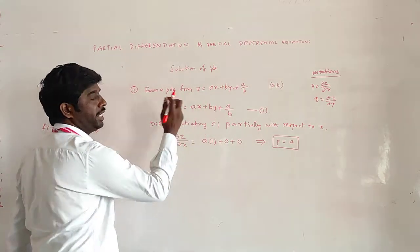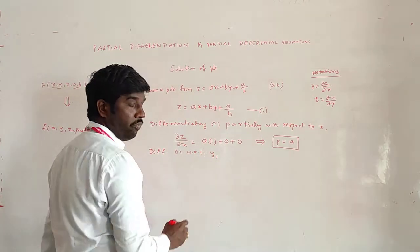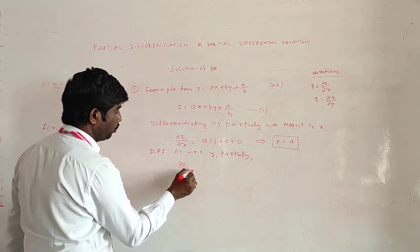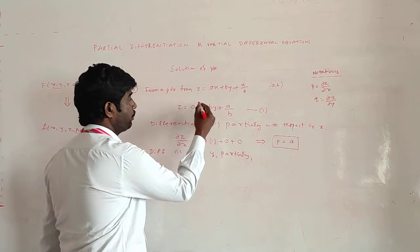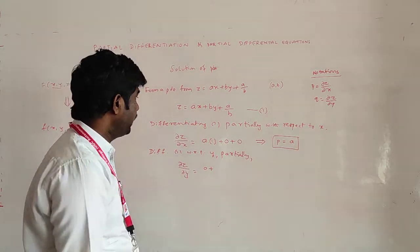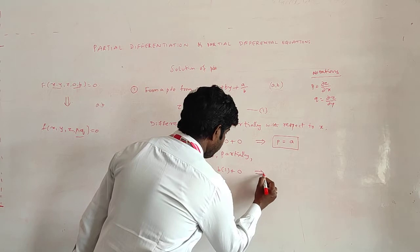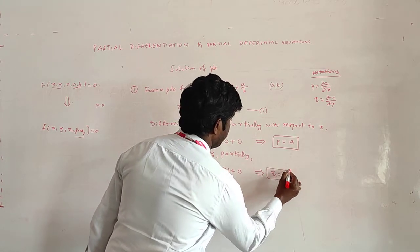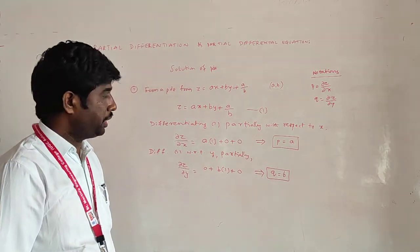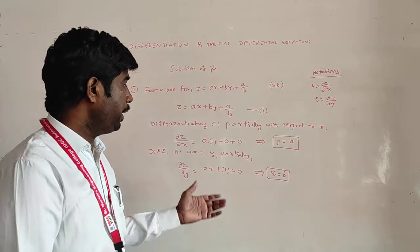Similarly, now I am differentiating equation 1 with respect to y partially. So dou z by dou y = 0 + B × 1 + 0, since x is treated as independent variable and is constant here. From this equation, Q = dou z by dou y = B, so B = Q. Now we have A = P and B = Q.